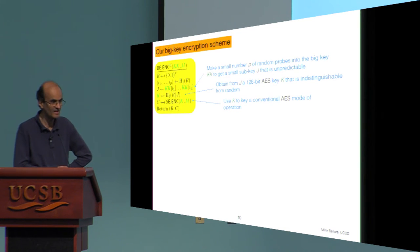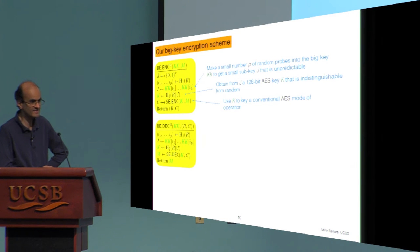And finally we just use that key, the key K, to apply some standard symmetric encryption scheme which works with small keys like some AES mode of operation. We return the ciphertext of the standard scheme plus the selector because you need the selector in order to decrypt and that's it for what the scheme looks like.